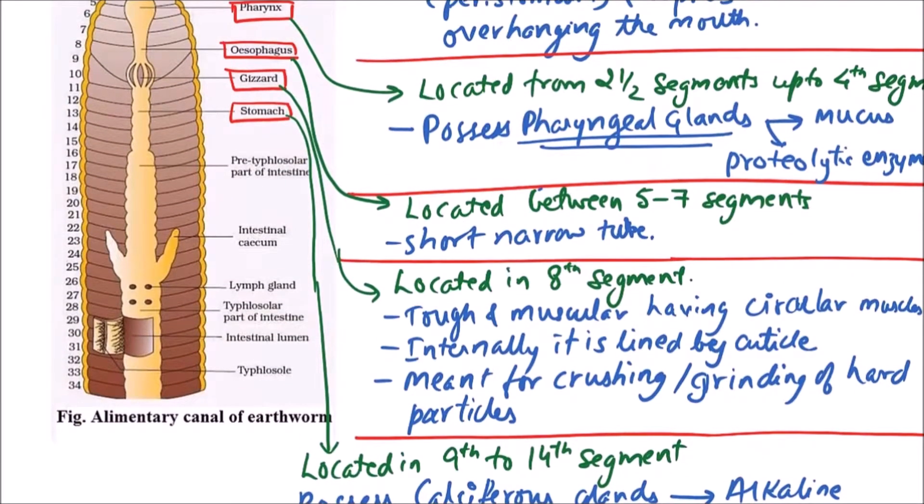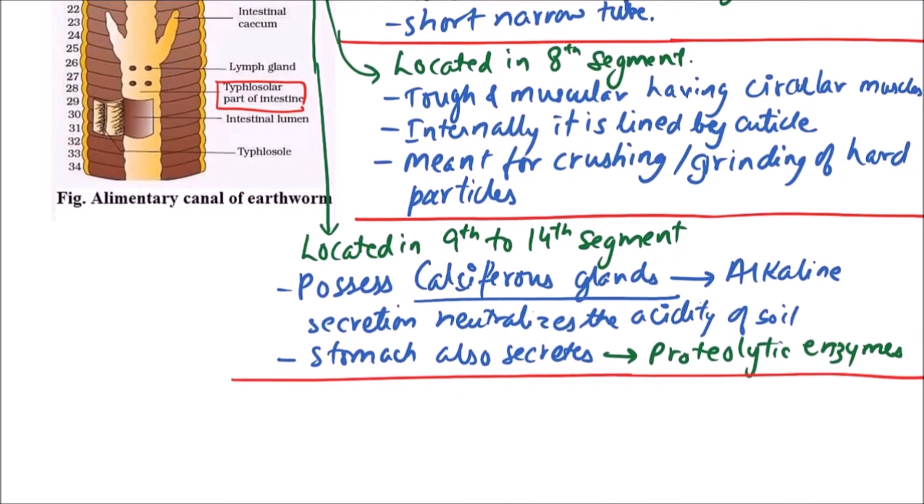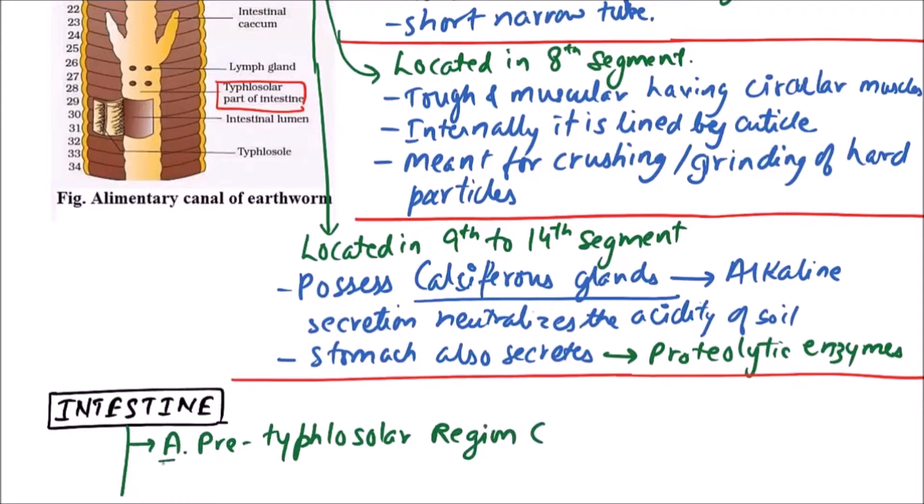The last part is intestine, which is divided into three regions: pre-typhlosolar region, typhlosolar region, and post-typhlosolar region. The first is pre-typhlosolar region which is located between segment fifteenth to twenty-sixth.